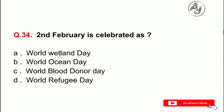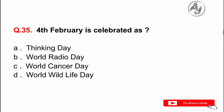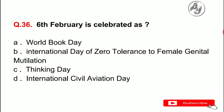Question number 34: 2nd February is celebrated as — the answer is A — World Wetland Day. Question number 35: 4th February is celebrated as — the answer is C — World Cancer Day. Question number 36: 6th February is celebrated as — the answer is D — International Day of Zero Tolerance to Female Genital Mutilation.